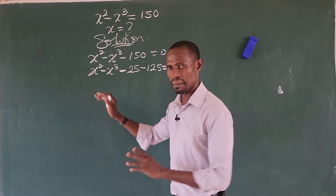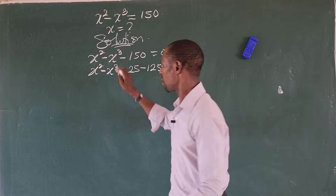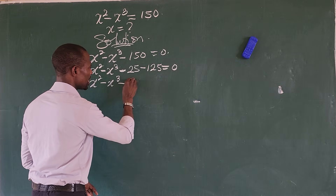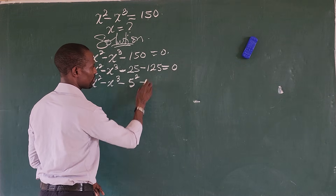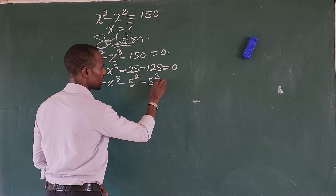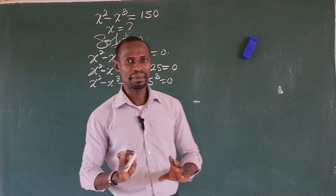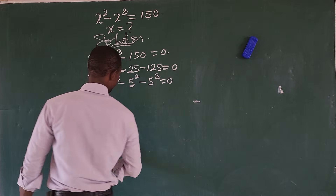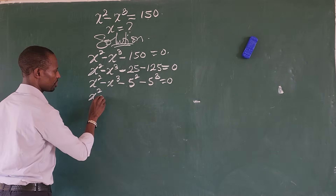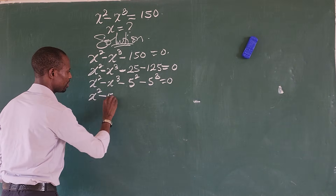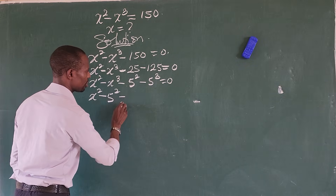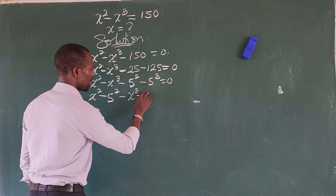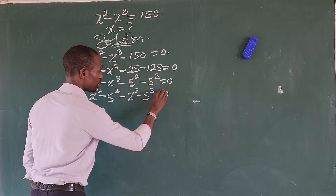Before that, let's express those in their powers. So this is going to give us x to the power of 2 minus x to the power of 3 minus 5 to the power of 2 minus 5 to the power of 3, all equal to zero. So let's rearrange them according to their powers, grouping x² with 5² and x³ with 5³.